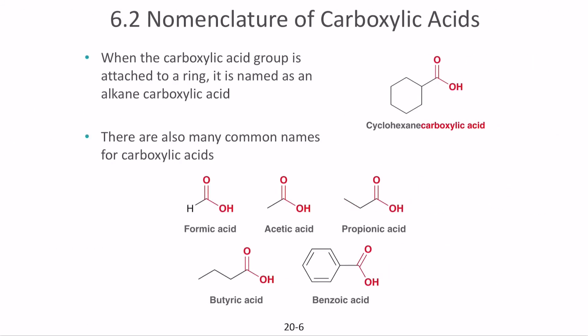When a carboxylic acid is attached to a ring, we call it an alkane carboxylic acid. For example, with cyclohexane, if there is a COOH group attached to the ring structure, we call that cyclohexane carboxylic acid.